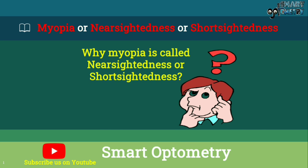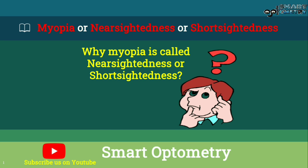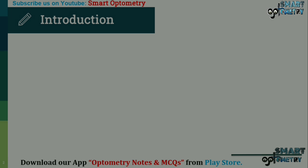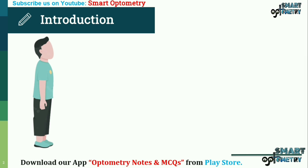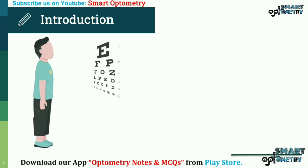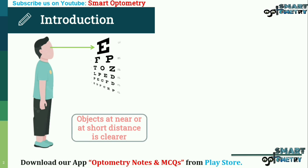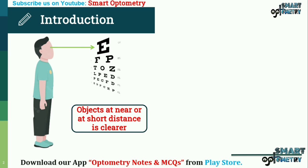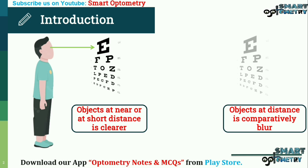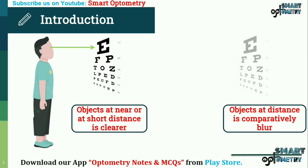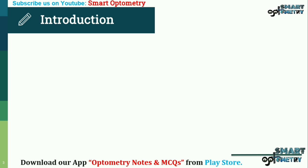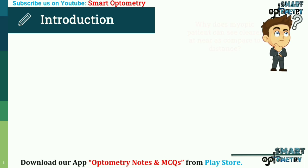Today I will discuss why myopia is called nearsightedness or short-sightedness. In simple words, a myopic patient can see objects at near or short distance clearer compared to distant objects, which is why myopia is called nearsightedness or short-sightedness. Now the question is why.